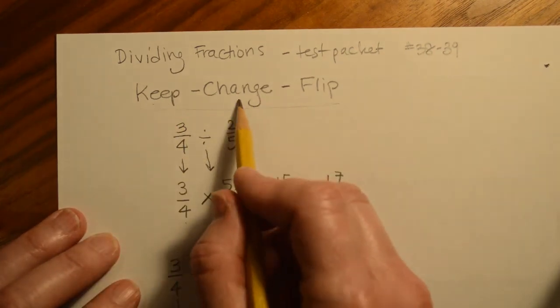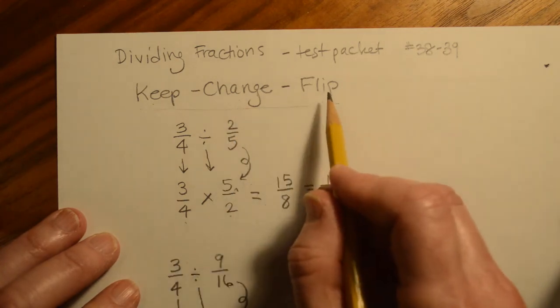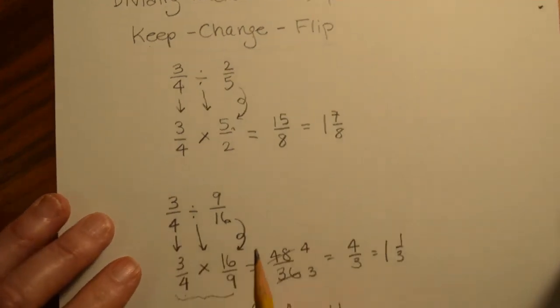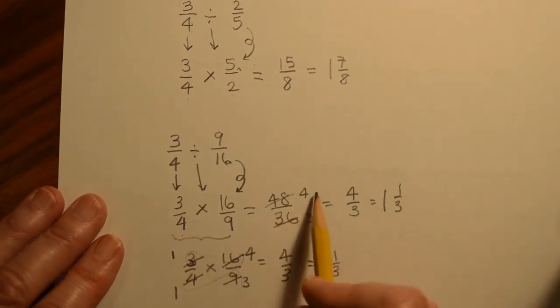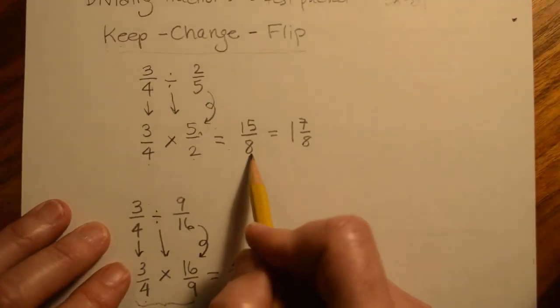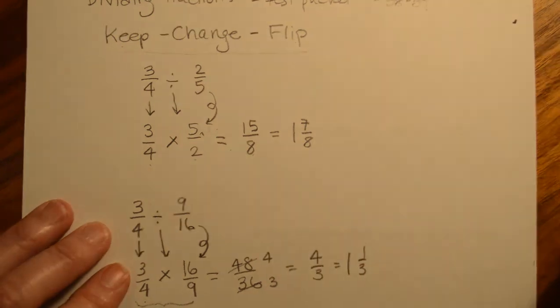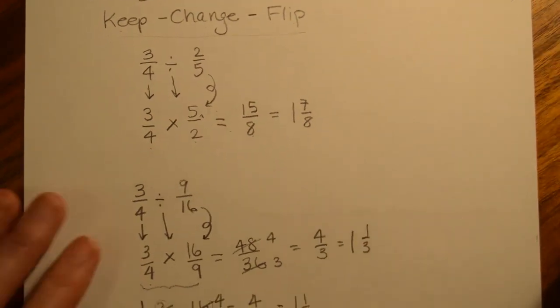Keep the first fraction the same. Change the sign from divide to multiply. Flip the second fraction. Don't forget to reduce either before or after and make sure that you convert your improper fractions back into mixed numbers. Okay. That's it.